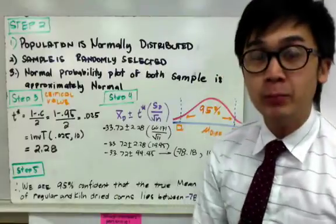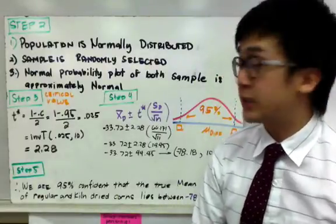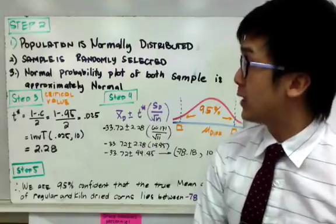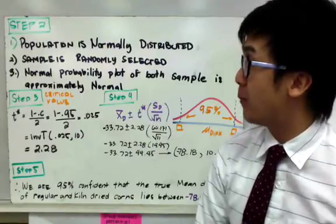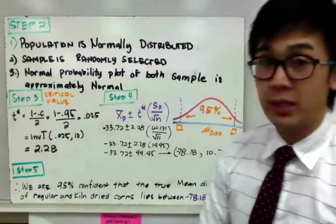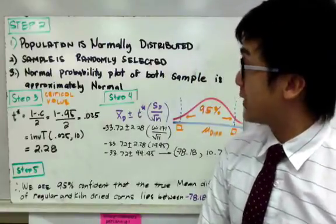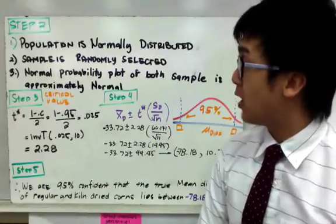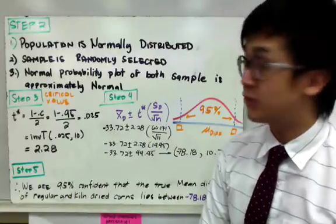Now for step number two, we need to verify our conditions. And for T distribution, we need to make sure that the sample came from a normally distributed population and that one is satisfied from the given problem. And also, the sample was randomly selected from an SRS, so that means it's also satisfied.